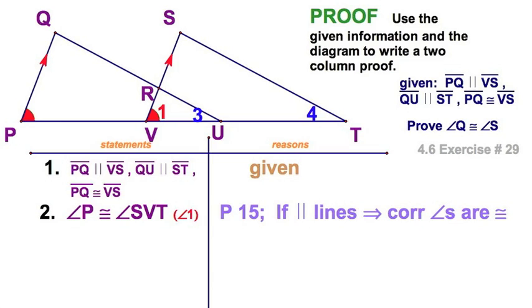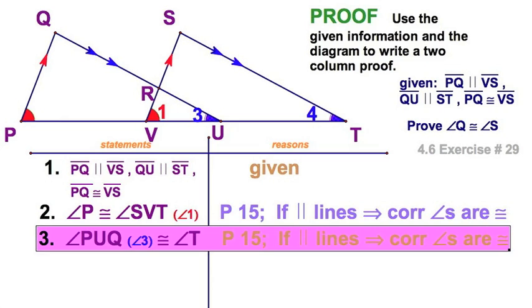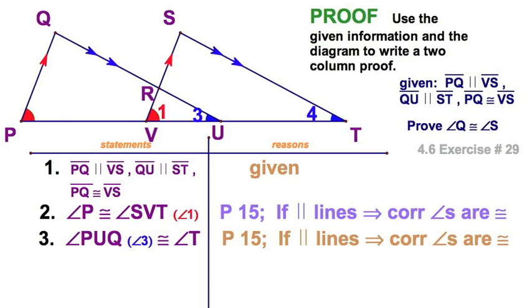So now, I'm looking at these two parallel lines. And I can see that, clearly, angles three and four with the same transversal. Angles three and four are congruent because they are also corresponding angles for that other set of parallel lines right there.